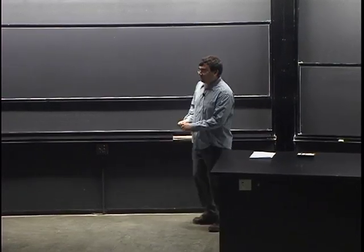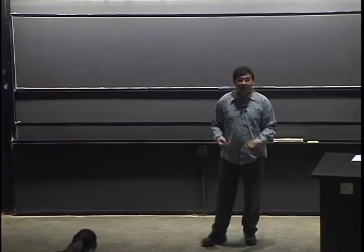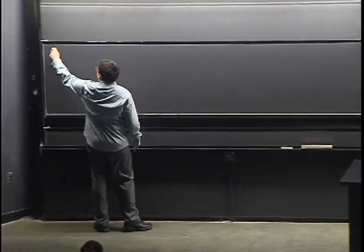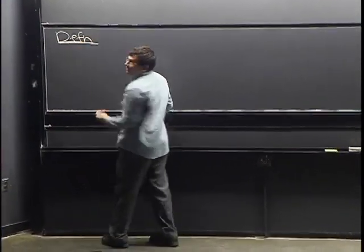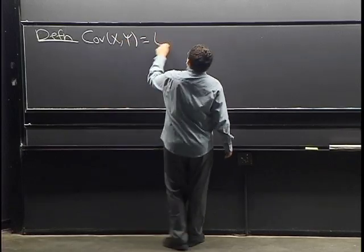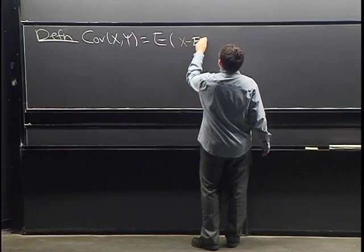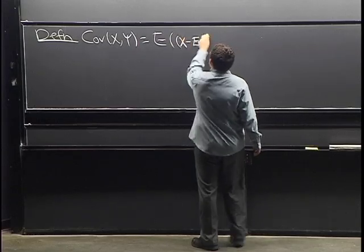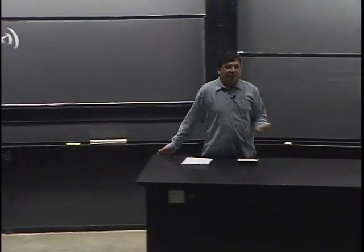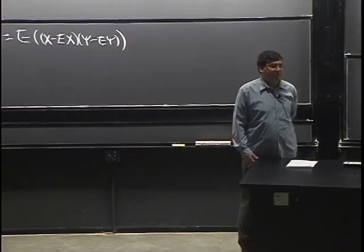Start with the definition. It's analogous to how we define variance, except now we have an X and a Y, because we're looking at joint distributions. Covariance of X and Y, where X and Y are any two random variables on the same space, is defined as: Cov(X, Y) = E[(X − E[X])(Y − E[Y])]. That's just the definition, so you can't really argue with it too much.